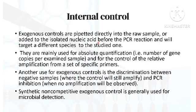Exogenous controls are directly added to the raw sample or to the isolated nucleic acid before setting up your PCR reaction. The exogenous control will target a different species — it may not be a human target; it may be some other species as well. It is mainly used for absolute quantification and for the control of relative amplification. Exogenous controls can also be used to discriminate between negative samples and samples with PCR inhibition. Synthetic non-competitive exogenous controls are generally used for the detection of microbial pathogens.